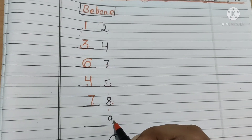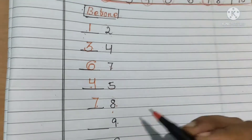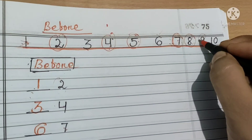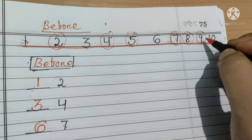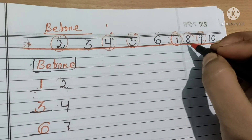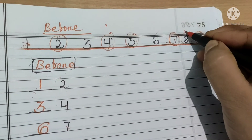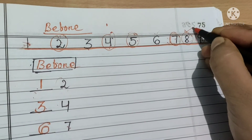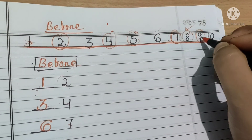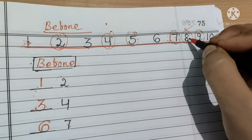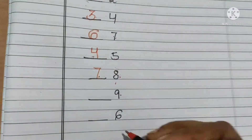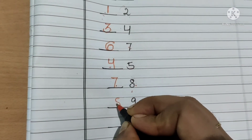Next comes number 9. Haam number line mein chalou dekh lete hain, kahan pe number 9 hai? Here is number 9. 9 se pahle konsa number aata hai? Number 8. What comes before number 9? Number 8. Haam idhar number 8 likhenge.